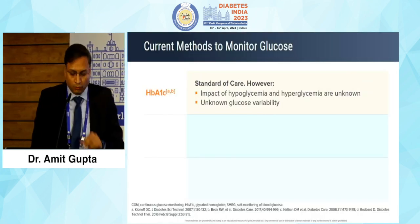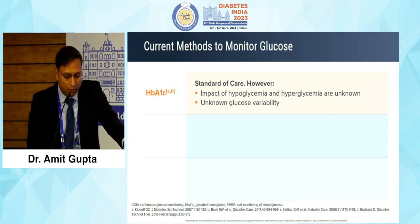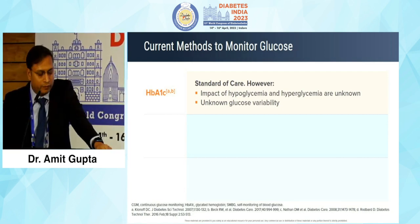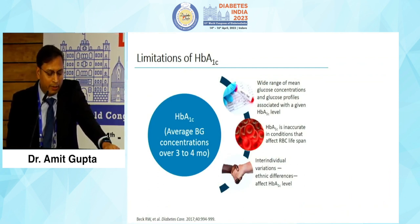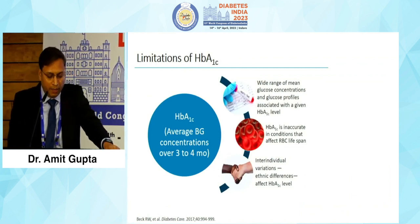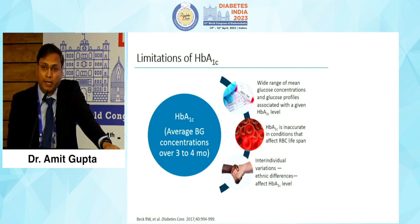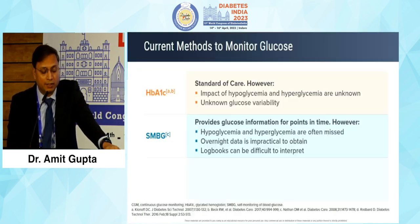The usual standard of care is HbA1c, but we know that the impact of hypoglycemia and hyperglycemia are unknown and glucose variability cannot be determined. There are other limitations of HbA1c, including a wide range of mean glucose concentration and glucose profile associated with a given HbA1c level. It is also inaccurate in certain conditions affecting RBC lifespan, with international variations, inter-individual variations, and ethnic differences.